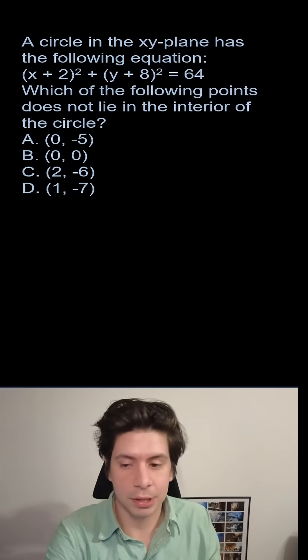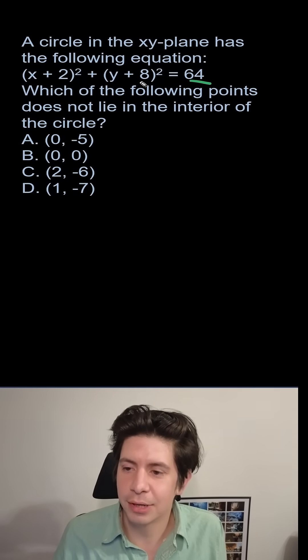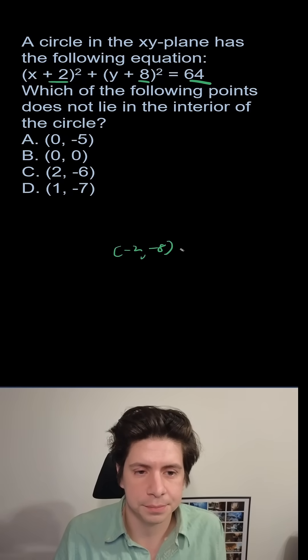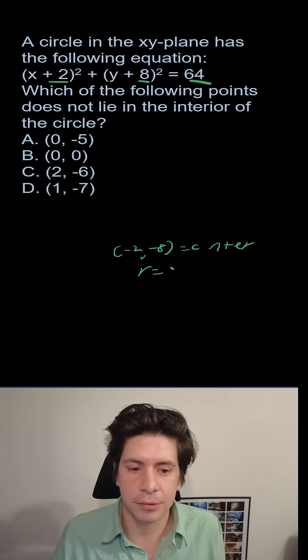So I'll do this one without Desmos, and then I'll do it with Desmos. So this tells us the radius squared, and these are each the negative values at the center. So the center is negative 2 comma negative 8, and then the radius equals the square root of 64, which is 8.